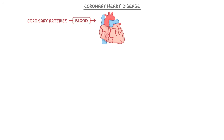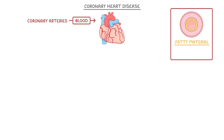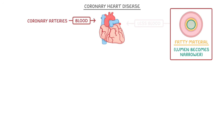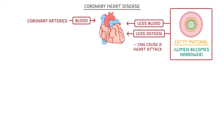Coronary heart disease is when the coronary arteries, which supply blood to the heart muscle, start to get blocked by the buildup of layers of fatty material. This causes the lumen of the arteries to become narrower so that less blood can flow through, which means that less oxygen reaches the heart muscle. And as the heart needs lots of oxygen to keep working, this can put strain on the heart and potentially cause a heart attack.